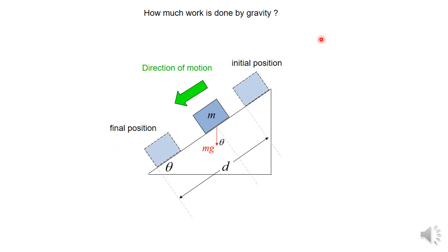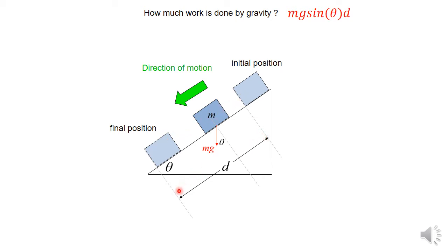How much work is done by gravity when you have an inclined plane with angle theta, and the block starts at the initial position and ends at the final position further down the slope? The direction of motion is downwards and gravity is always acting downwards. You get mg sine theta, which gives the component of the force in the direction of motion, multiplied by the distance d. So the work is mg sine theta times d.